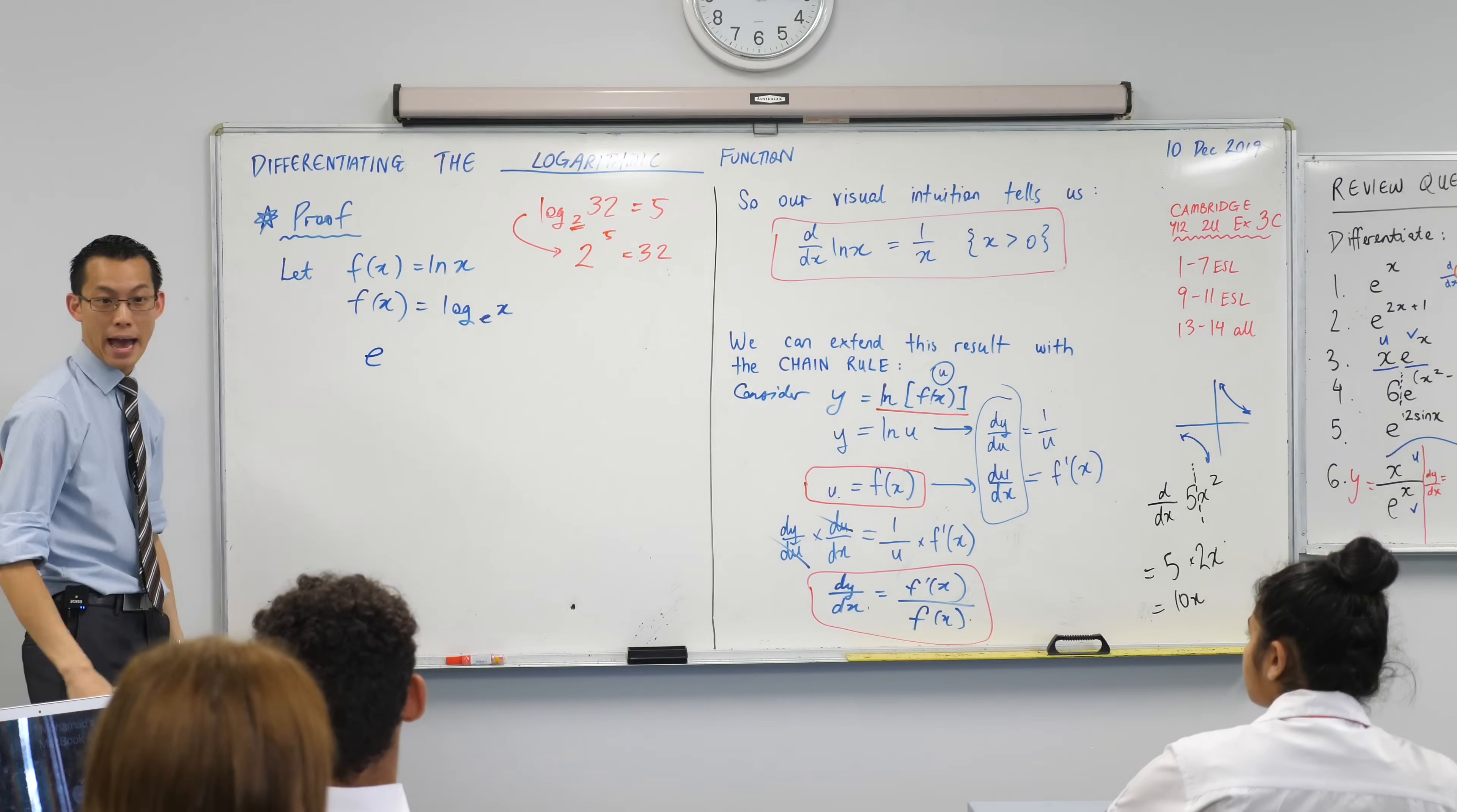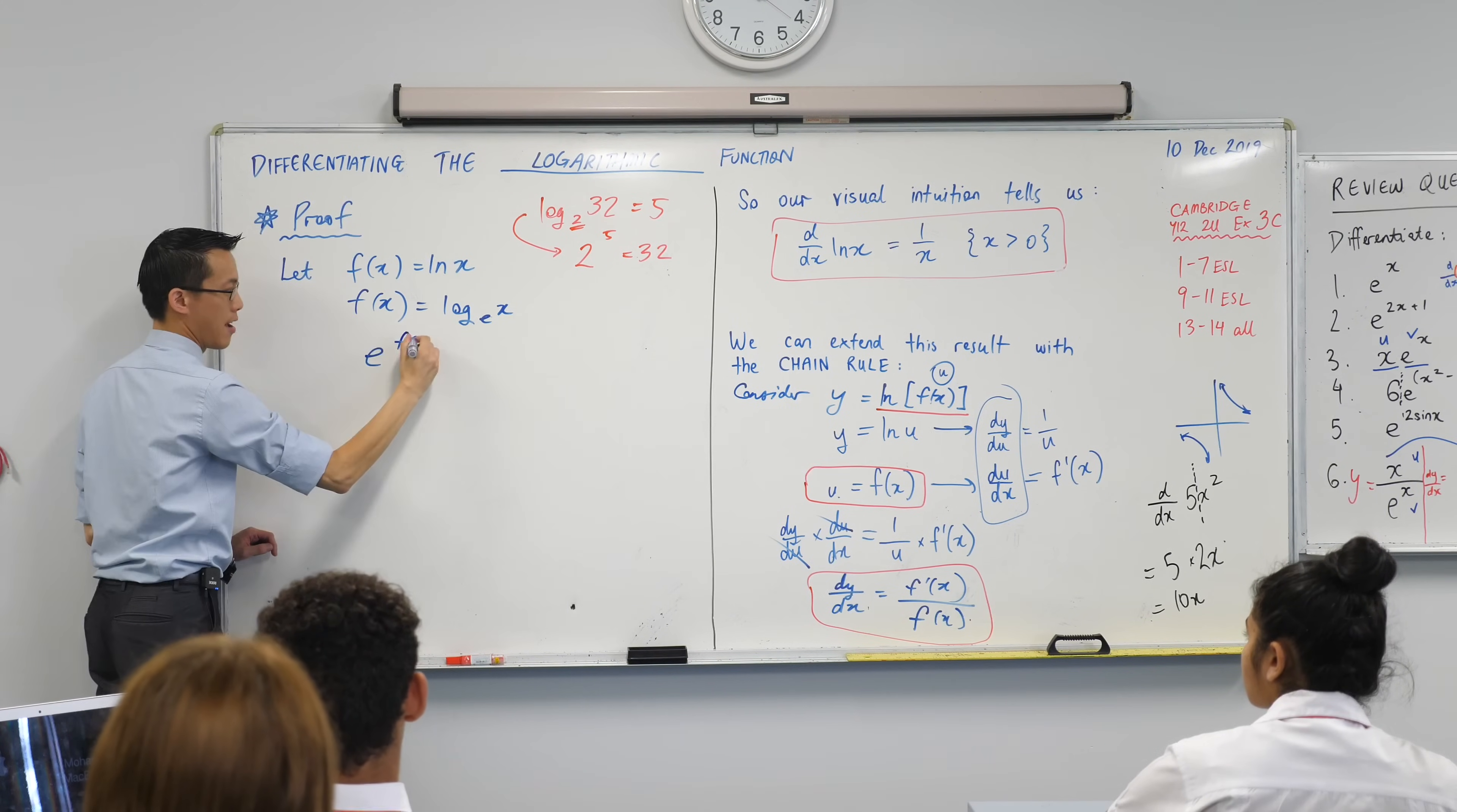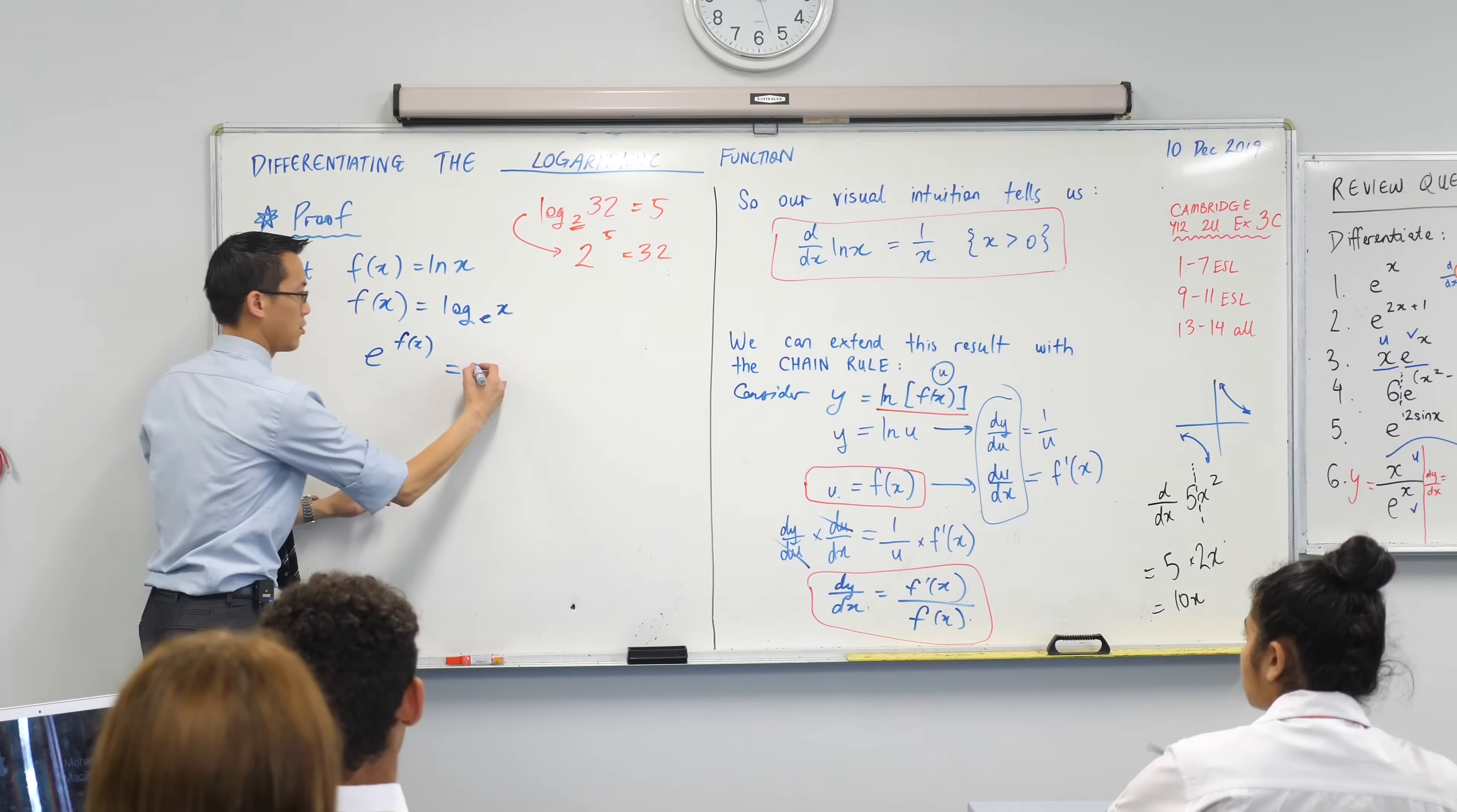That's going to be my base. What's my power? F of X. This guy over here becomes the power, f of x. And then what do I have left? There's only one thing. It's just the X.